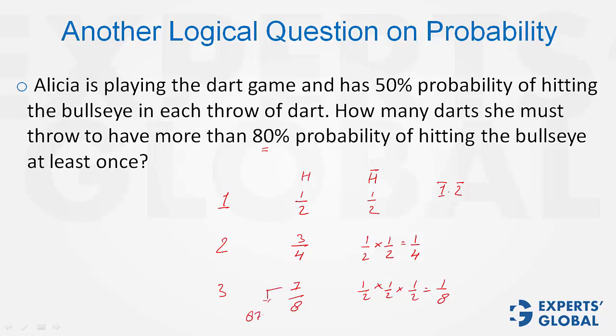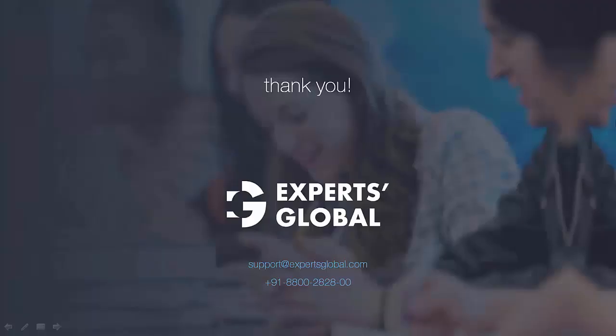Which is 87.5% probability, greater than 80%. So, the answer is 3. She must throw three darts to have a probability of greater than 80%. This was the concept, guys.